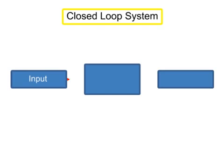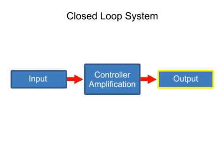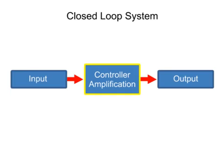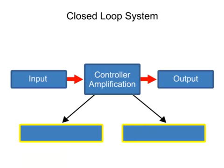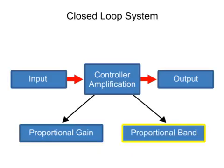In a closed-loop system, a controller is used to amplify the amount of output change in proportion to the change that occurs at the input. Controllers provide amplification using one of two modes of proportional functions: proportional gain and proportional band.